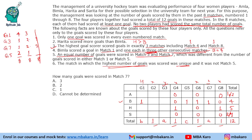Harita, as the highest scorer, scored goals in 3 matches including match 4 and match 8 where she scored 1 each. So in one other match she must score 3 goals. If Harita scores 3 goals in match 1, the total for match 1 becomes 4, which satisfies the condition of match 1 being the unique highest. This means match 3 and 7 each have 1 goal and match 5 has 2 goals.